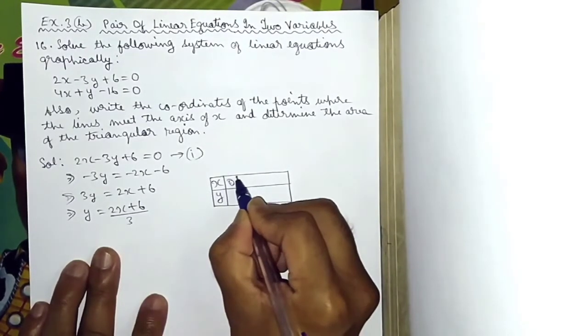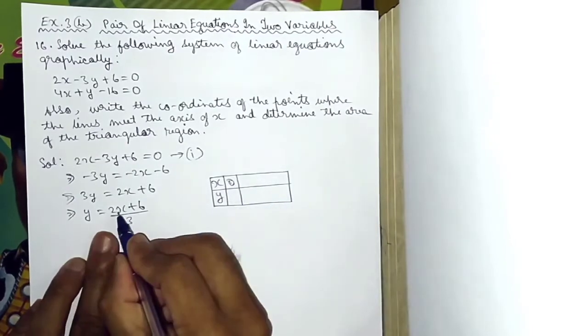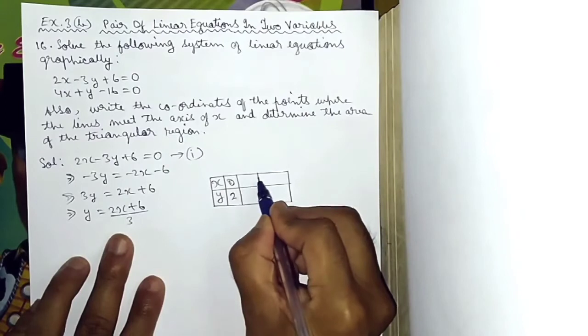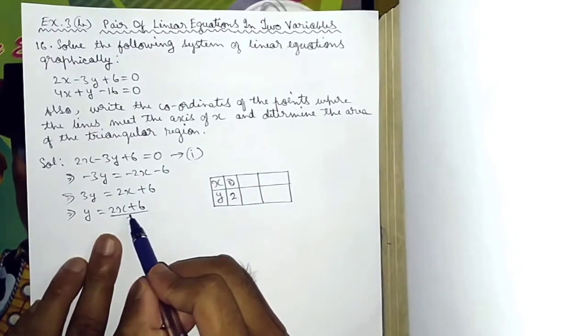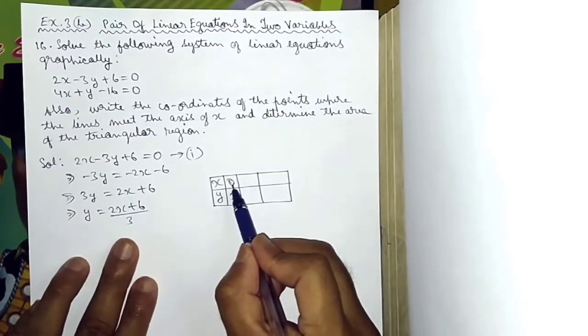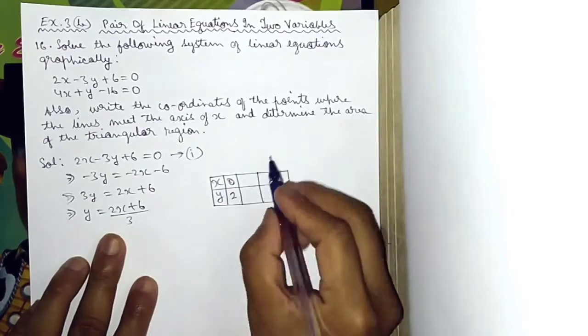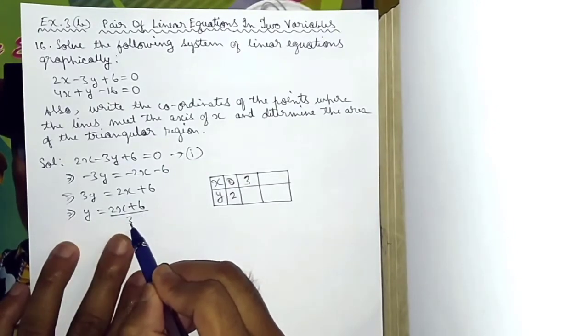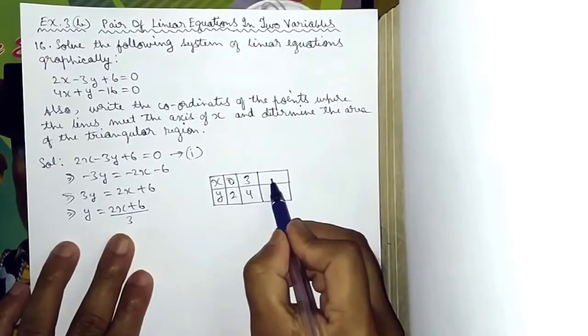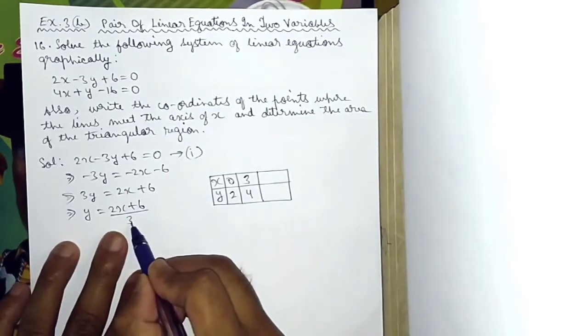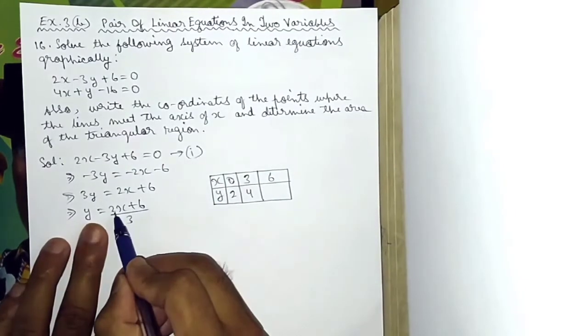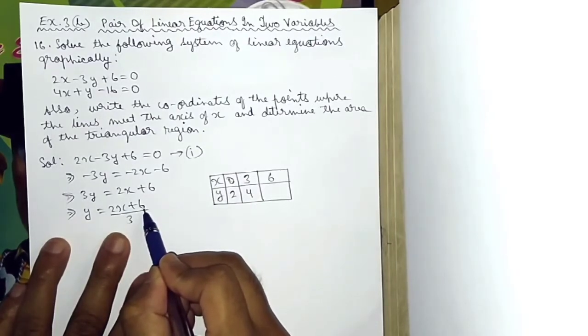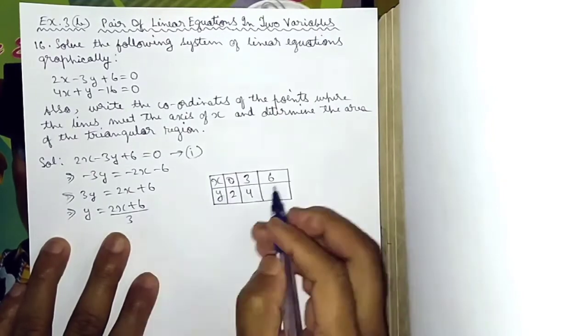When x equals 0, 2 into 0 is 0, 0 plus 6 is 6, 6 divided by 3 is 2. When x equals 3, 2 into 3 is 6, 6 plus 6 is 12, 12 divided by 3 is 4. When x equals 6, 2 into 6 is 12, 12 plus 6 is 18, 18 divided by 3 is 6.